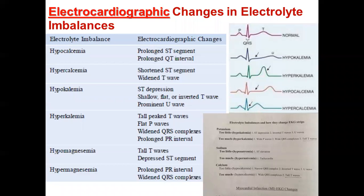In the first picture on the top, we can see the normal EKG. The normal EKG shows the P wave, Q wave, and one complex called the QRS complex, and the T wave. The normal EKG contains waves, intervals, segments, and the QRS complex.